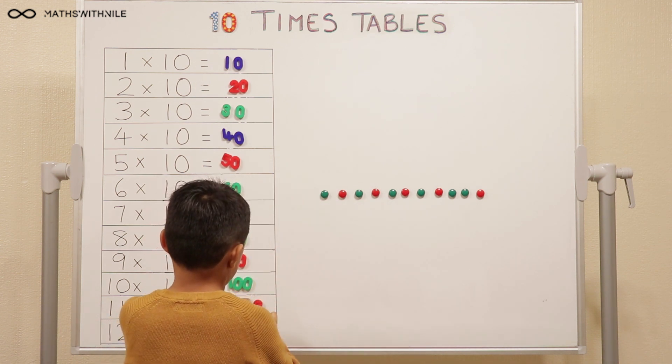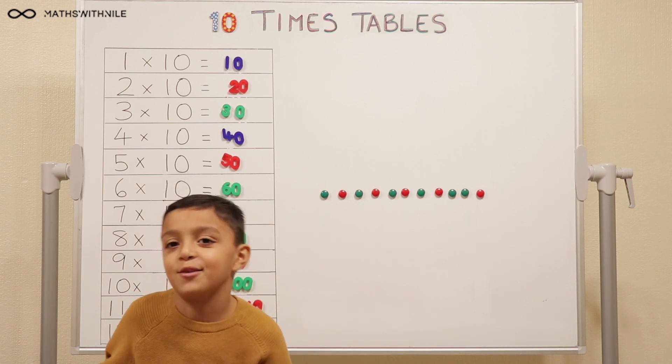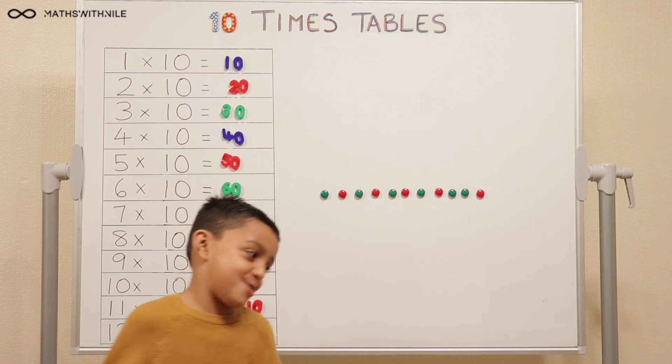Is that 1, 1, 10? Yeah. Is 1, 1, 0? I want 1, 10. 1, 10. 1, 1, 0. Okay, good.